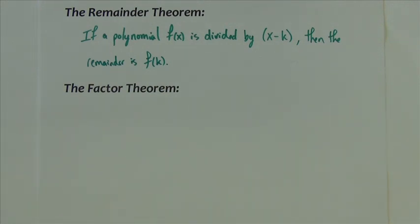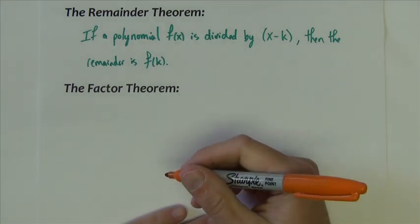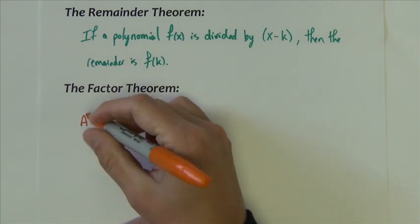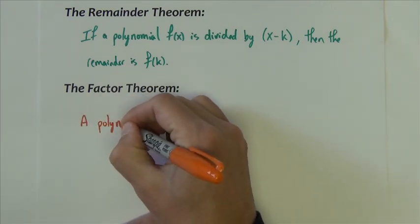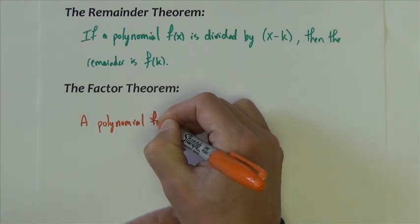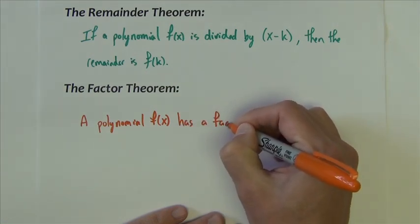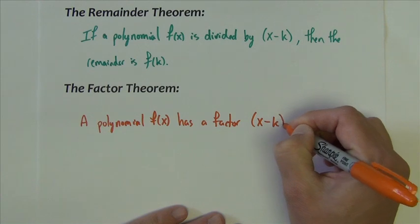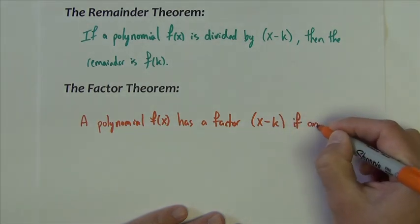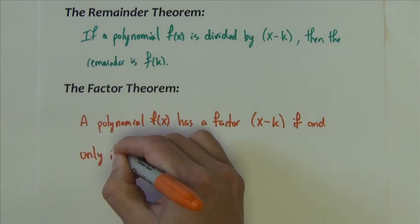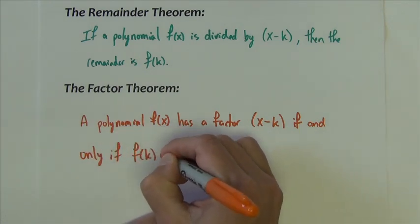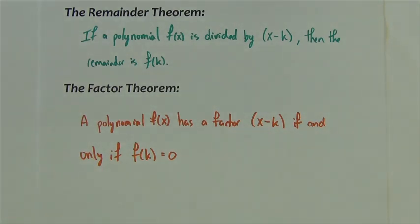Let's go ahead and write out the factor theorem next, and then we'll get into those two example problems. And the factor theorem says that the polynomial function f of x has a factor of x minus k if and only if f of k equals 0. So again, kind of tie those together, you know, what does that mean?